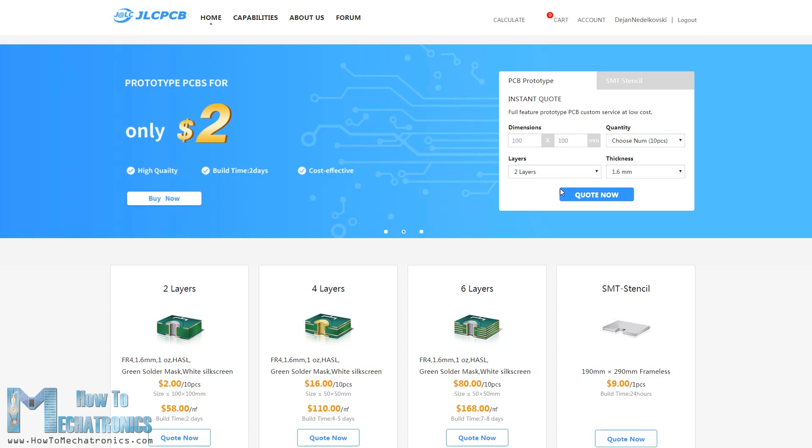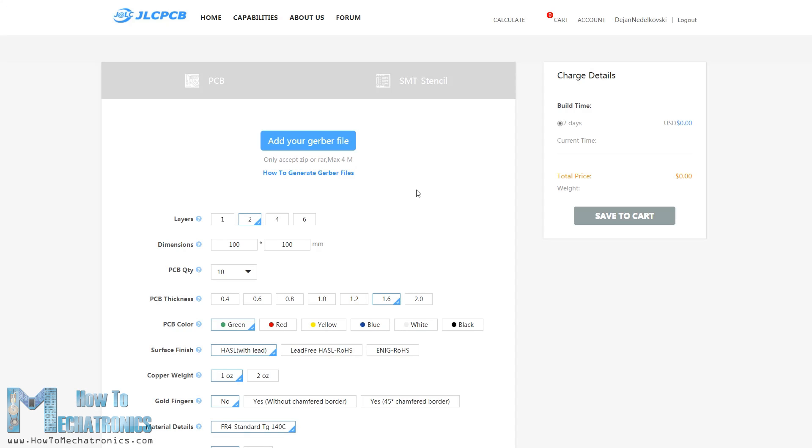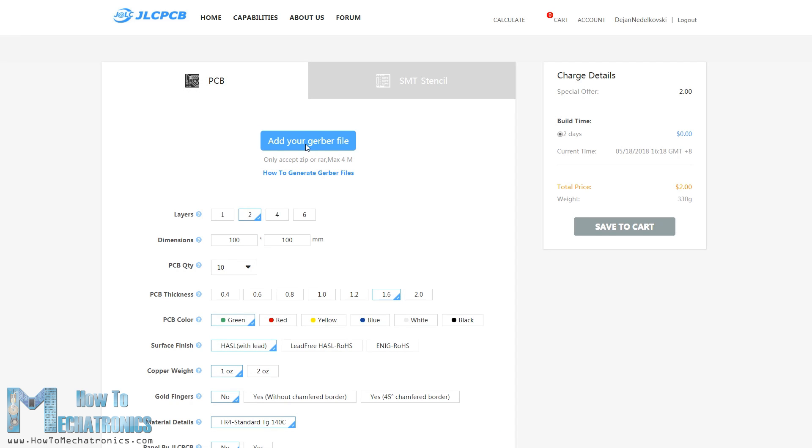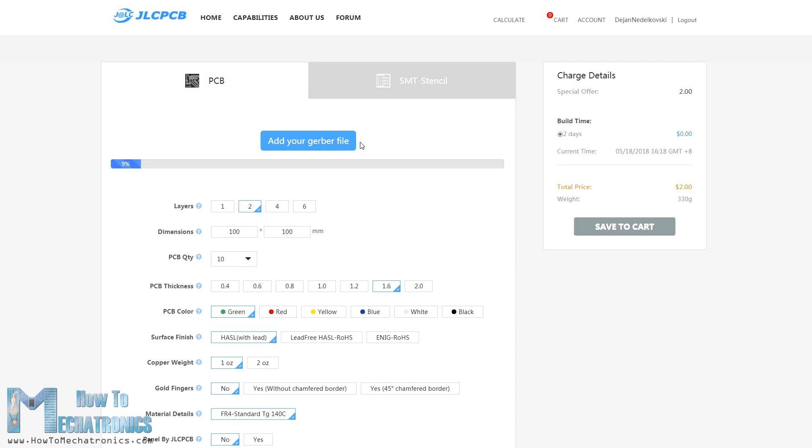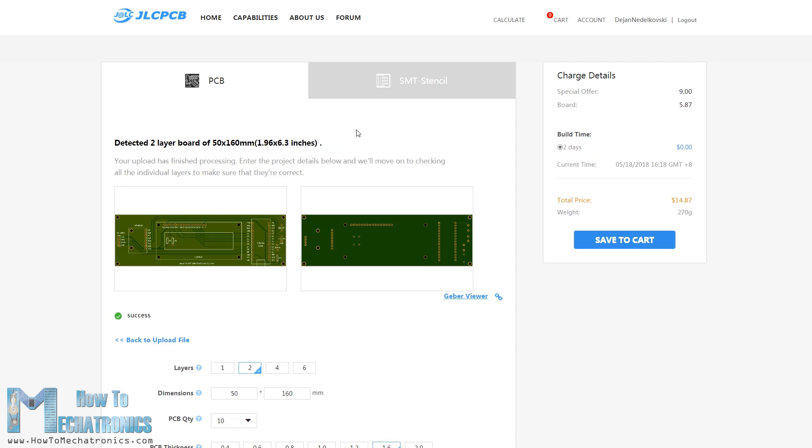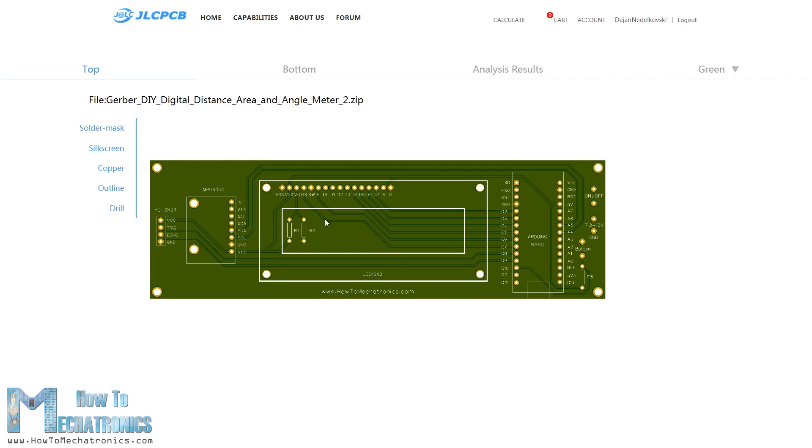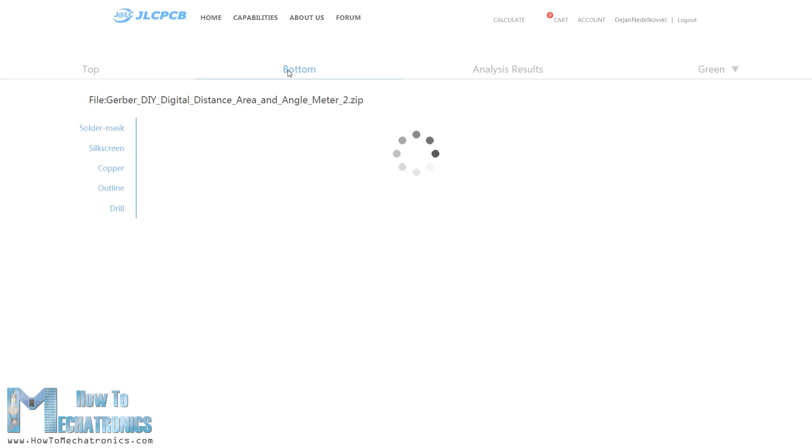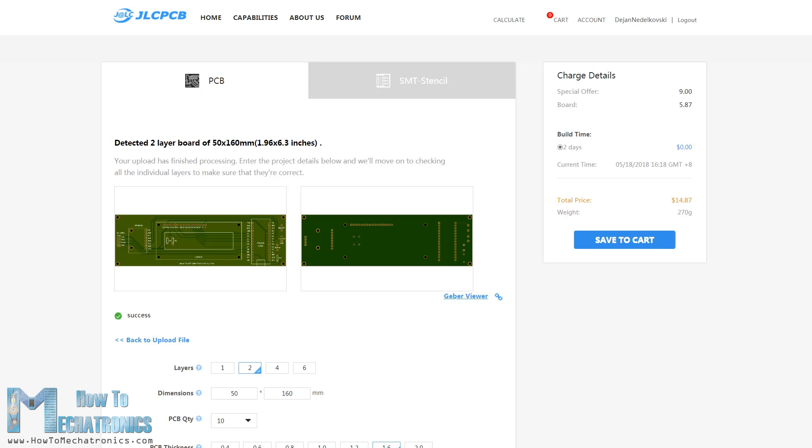Then we can order our PCB from JLCPCB, which is actually the sponsor of this video. Here we can simply drag and drop the Gerber file. Once uploaded we can review our PCB in the Gerber viewer. If everything is alright, we can select the properties that we want for our PCB and order it at a reasonable price.